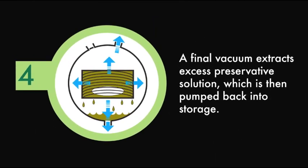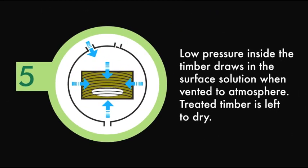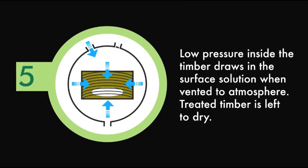A final vacuum extracts any excess preservative solution, which is then pumped back to storage. The vessel is finally vented to normal atmospheric pressure and low pressure inside the timber draws in the surface preservative solution.